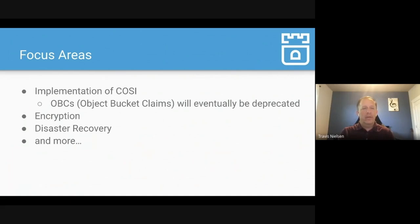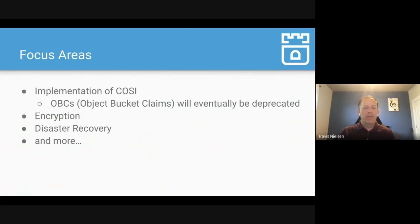Some features we're working on: COSI (Container Object Storage Interface) will eventually replace object bucket claims — it's still alpha in Kubernetes 1.25, but we'll have an implementation soon. Other areas include encryption across the wire and other encryption types, additional KMS backends, and disaster recovery scenarios. There's always more to do in the storage realm.